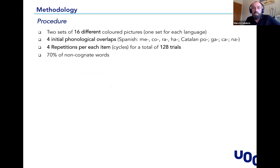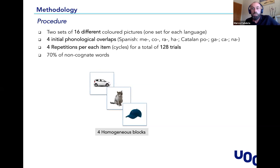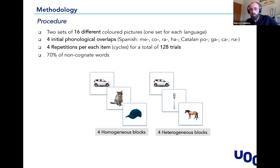For the task, we selected two sets of 16 different pictures — two sets for the two languages — in order to have four initial phonological overlaps that were different between the two languages, to avoid cross-linguistic effects. Each item was repeated four times, with a total of 120 trials per language. With this set of stimuli, we designed four homogeneous blocks in which the words were phonologically related, and the same items were shuffled to create four heterogeneous blocks in which the same pictures appeared without any phonological overlap. So four homogeneous and four heterogeneous blocks for each language.